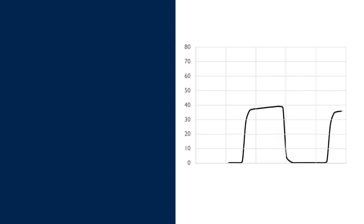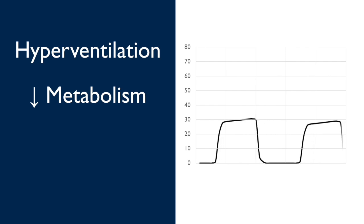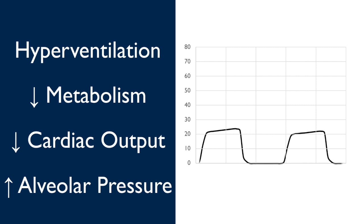Now, let's compare the normal with our first abnormal example. This starts off looking normal enough, but notice that the end-tidal is gradually decreasing. This can happen in any situation that causes the arterial CO2 to decrease, such as hyperventilation, or a decrease in metabolism. But remember, the end-tidal CO2 can also go down by anything that causes an increase in dead space, such as decreased cardiac output, a pulmonary embolism, or hyperexpanded alveoli.